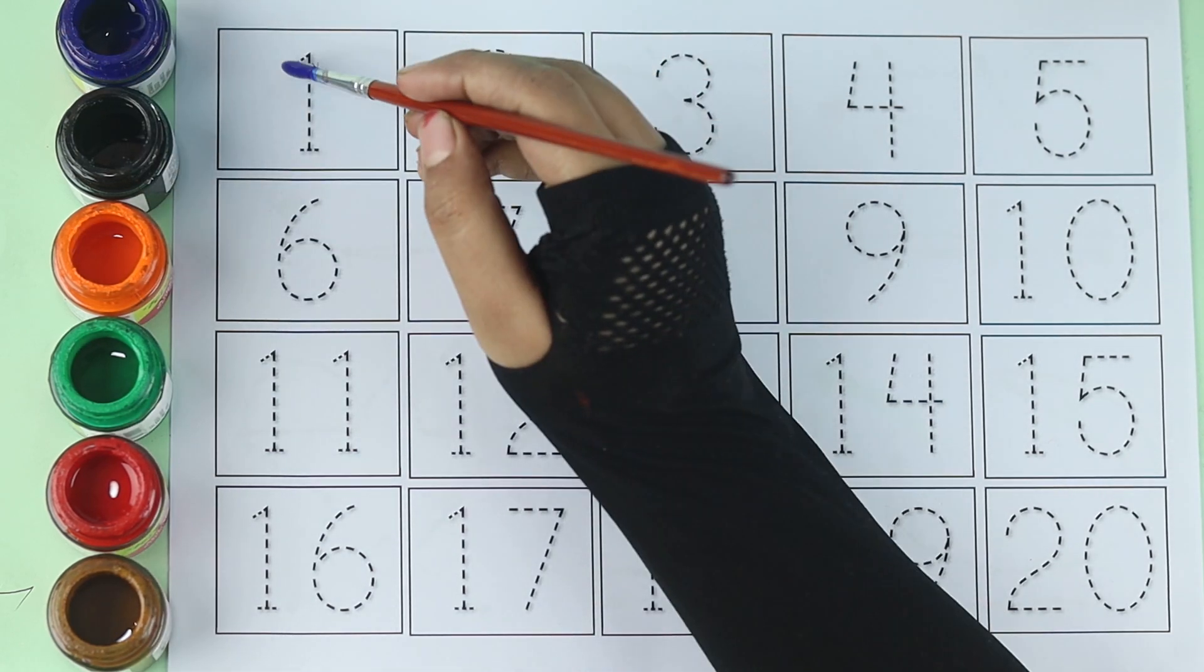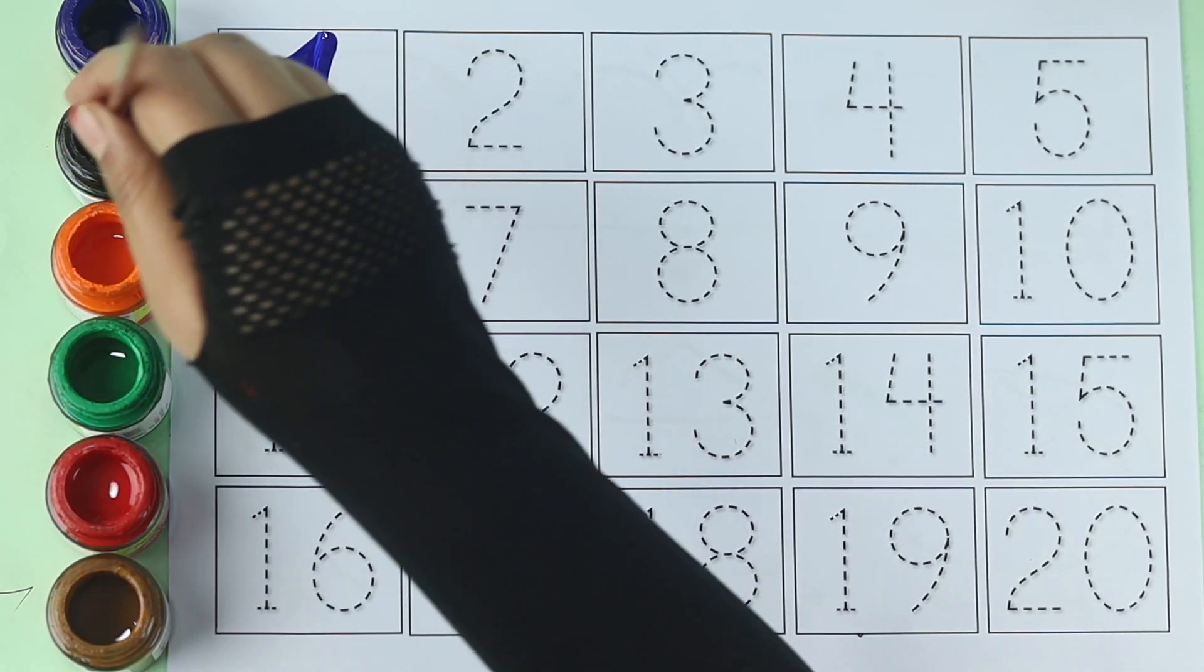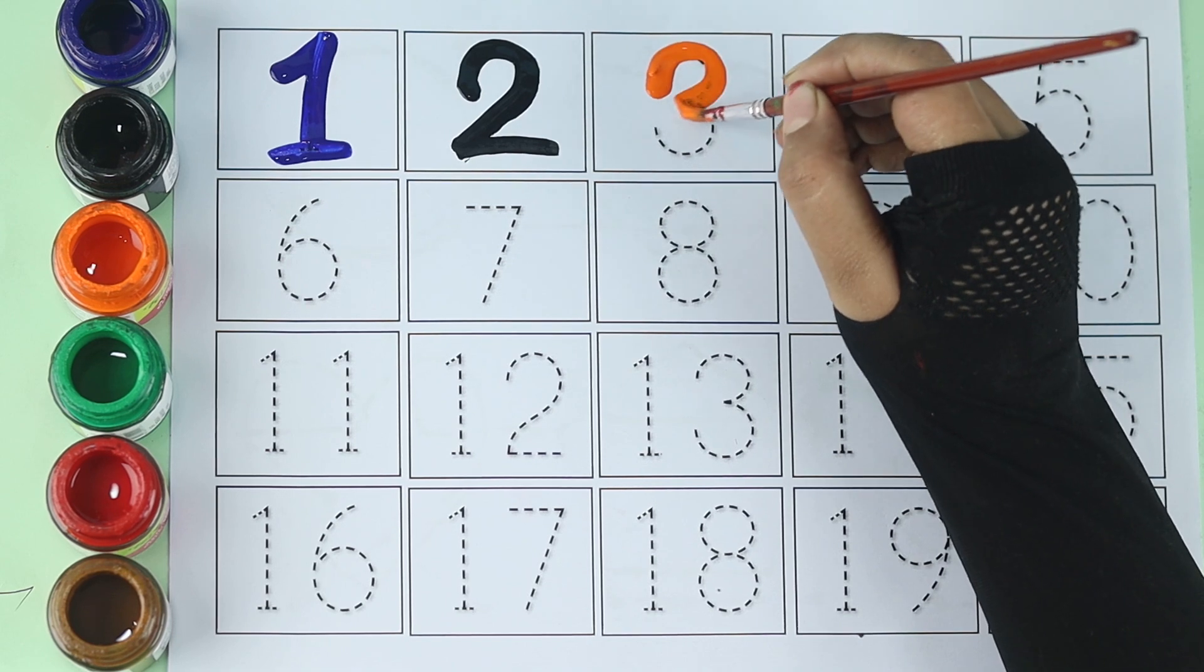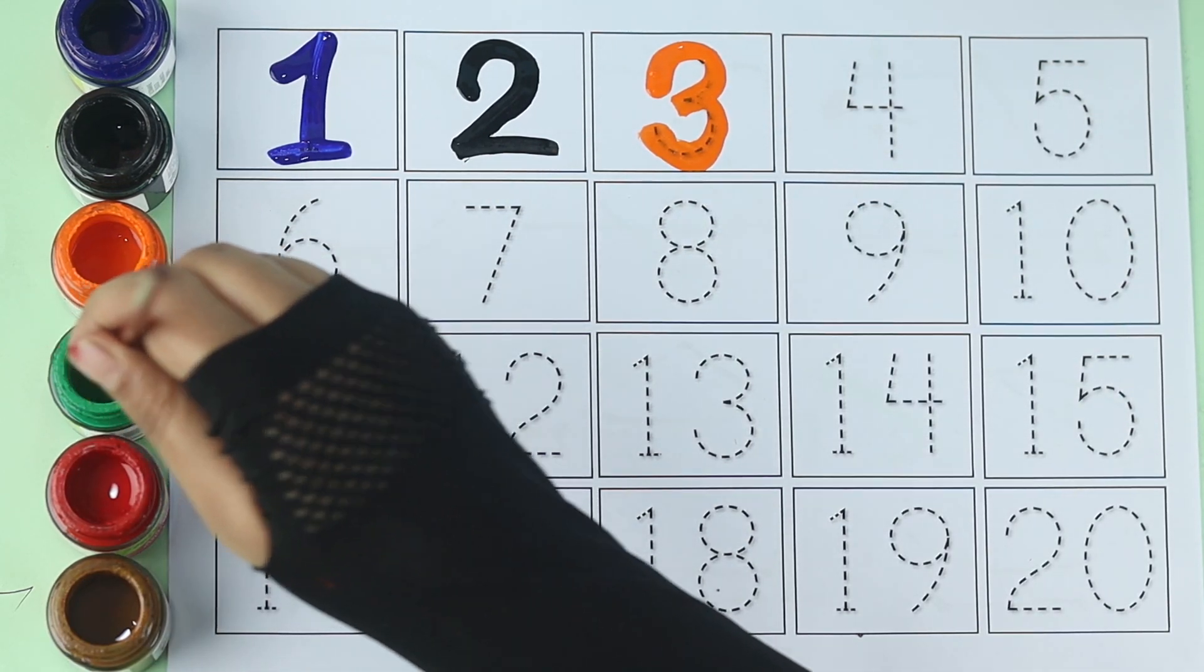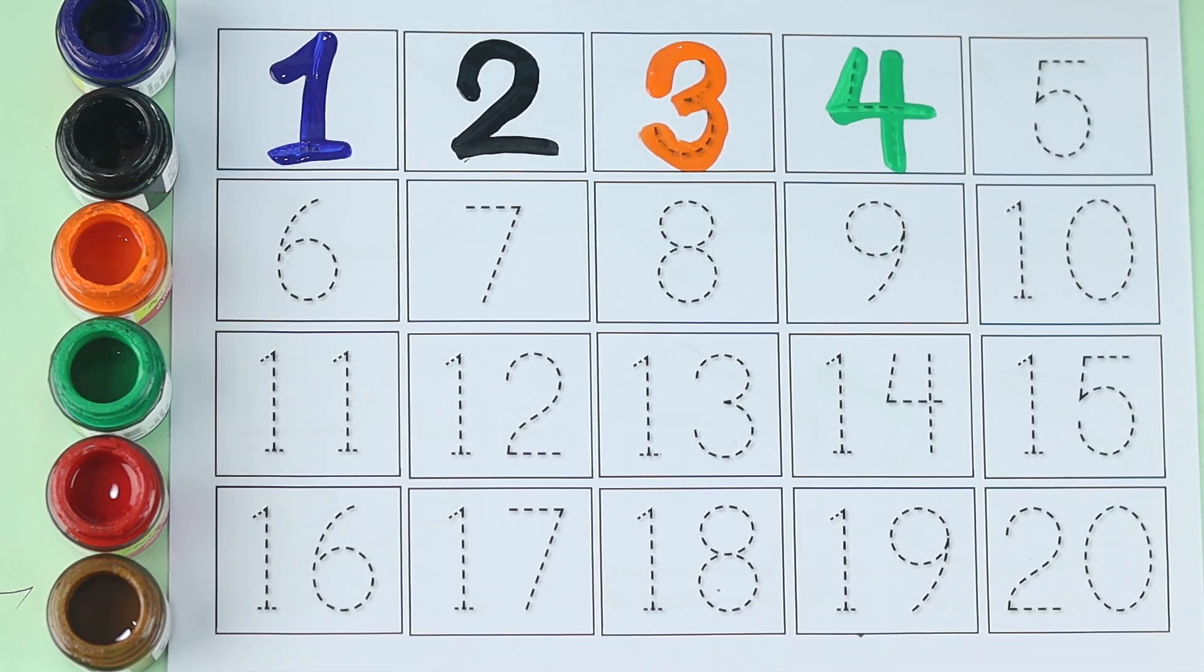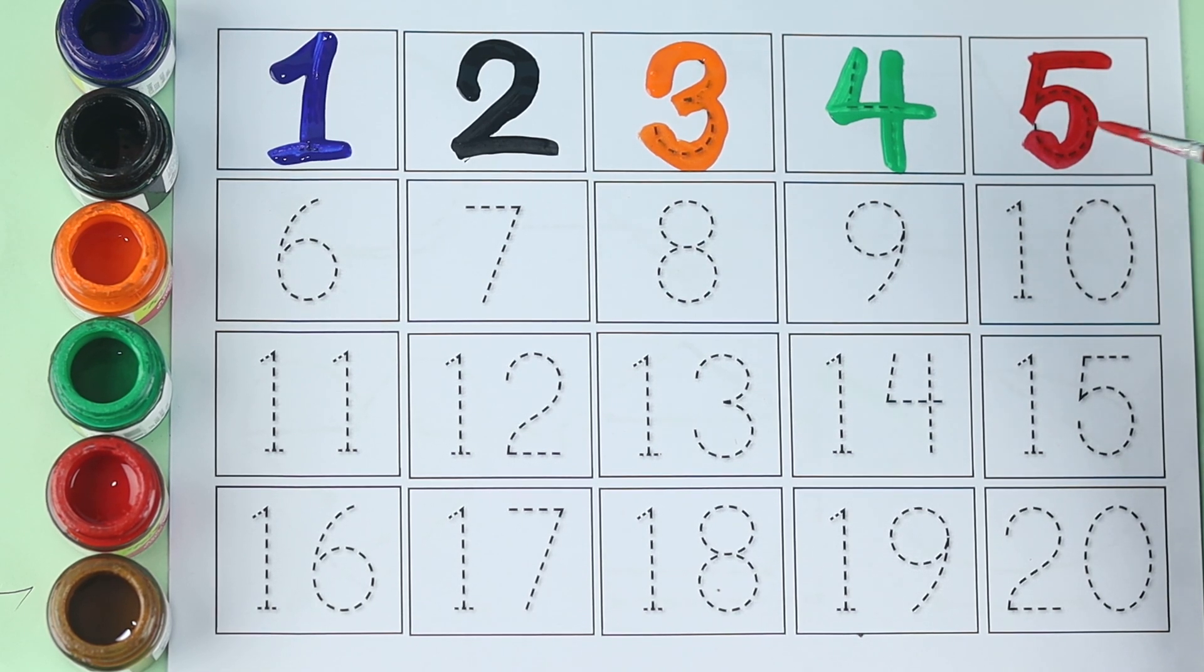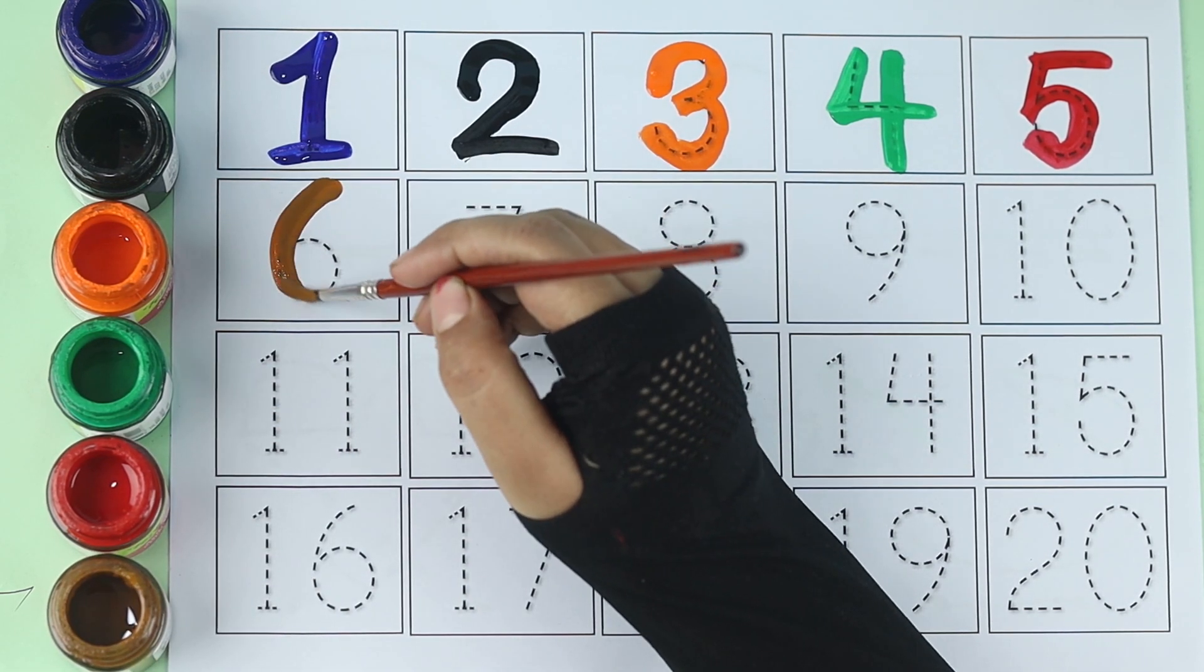Blue color, one. Black color, two. Orange color, three. Green color, four. Red color, five. Brown color, six.